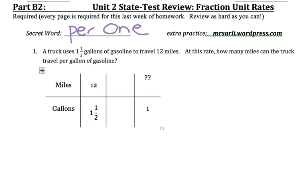Alright, so all of these problems involve finding some sort of unit rate per one, and our main strategy to represent our thinking is to use a ratio table. So the first one says a truck uses 1.5 gallons of gasoline to travel 12 miles. Notice that in the ratio table I put 12 miles and 1.5.